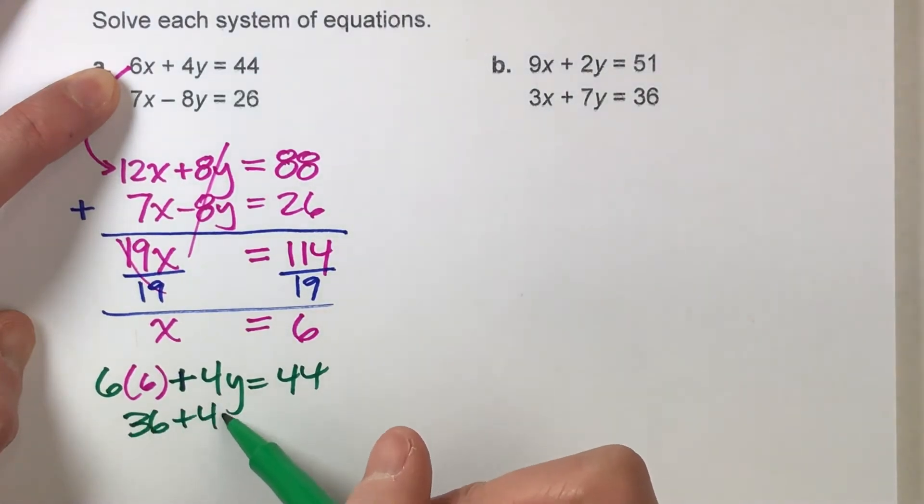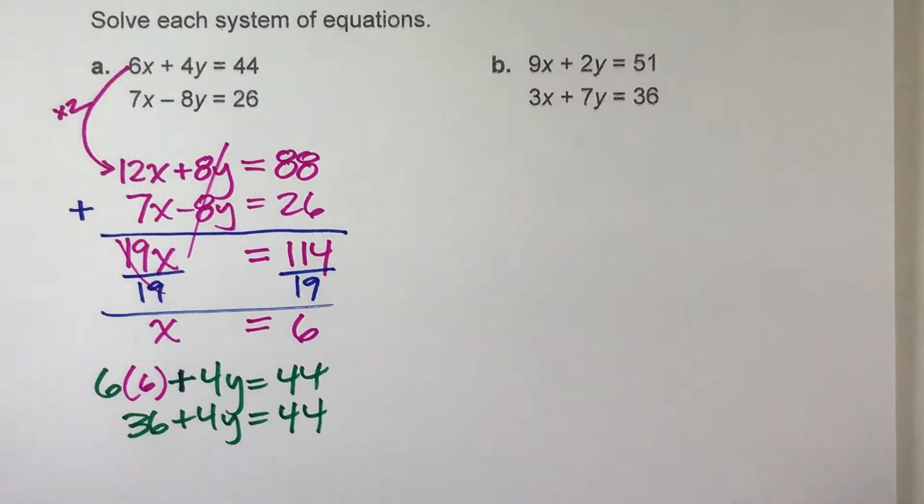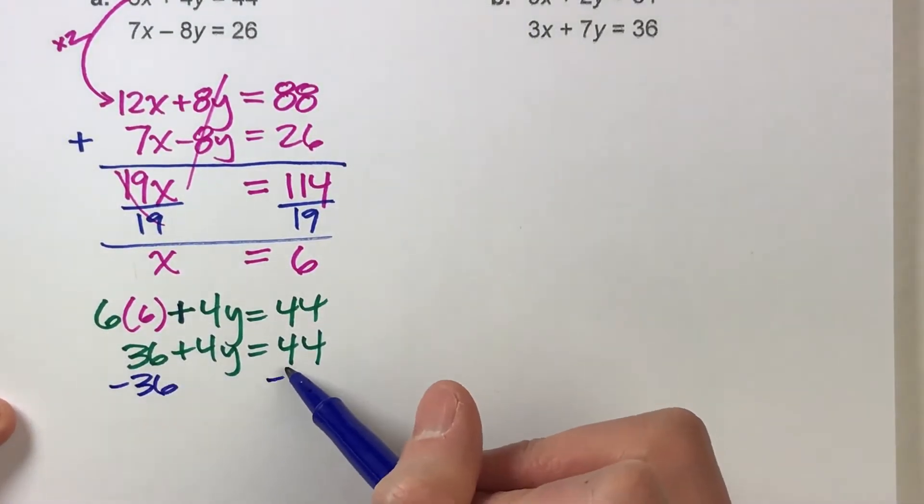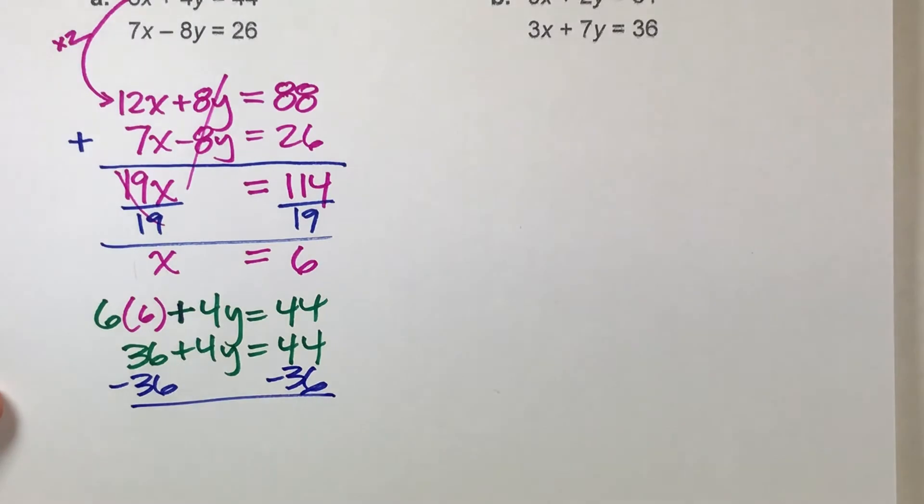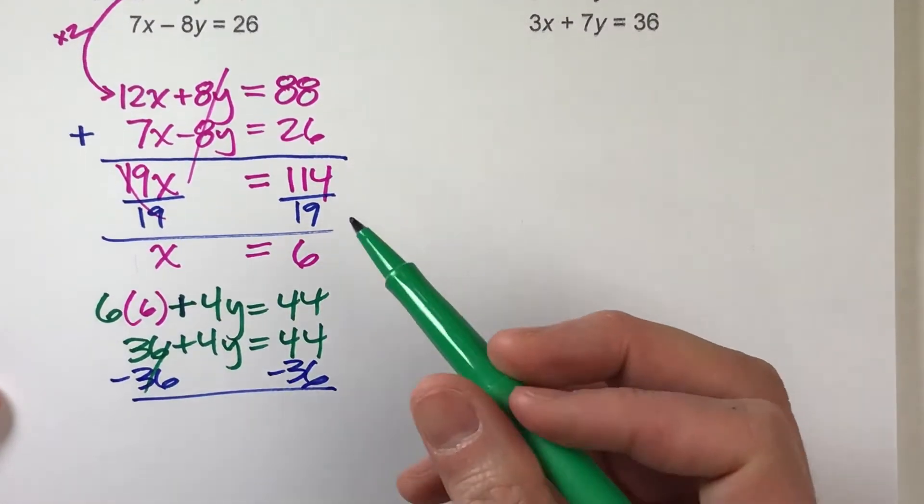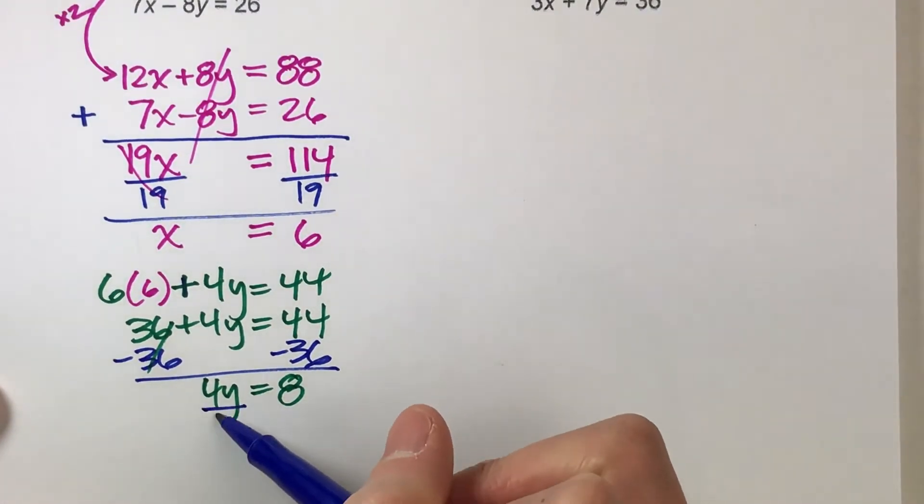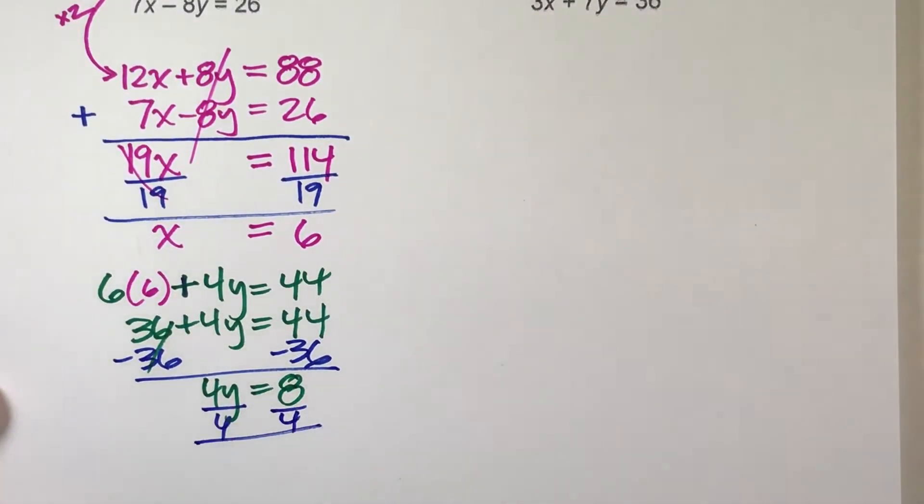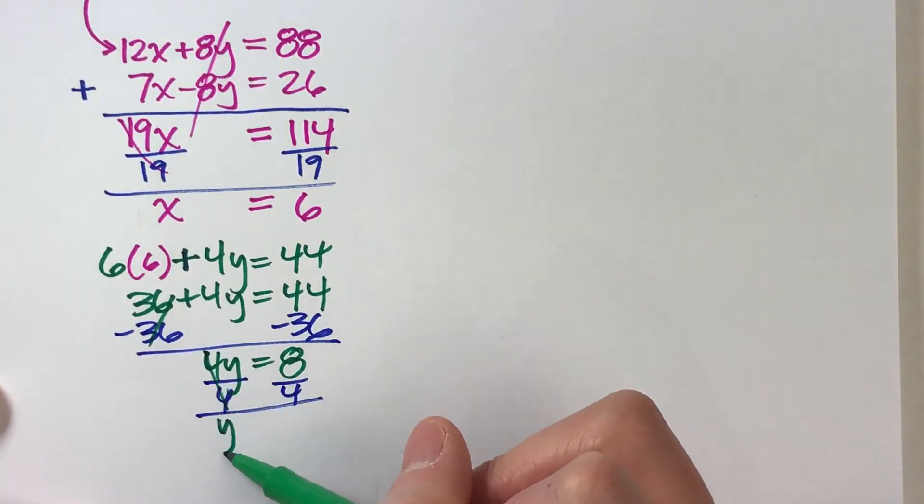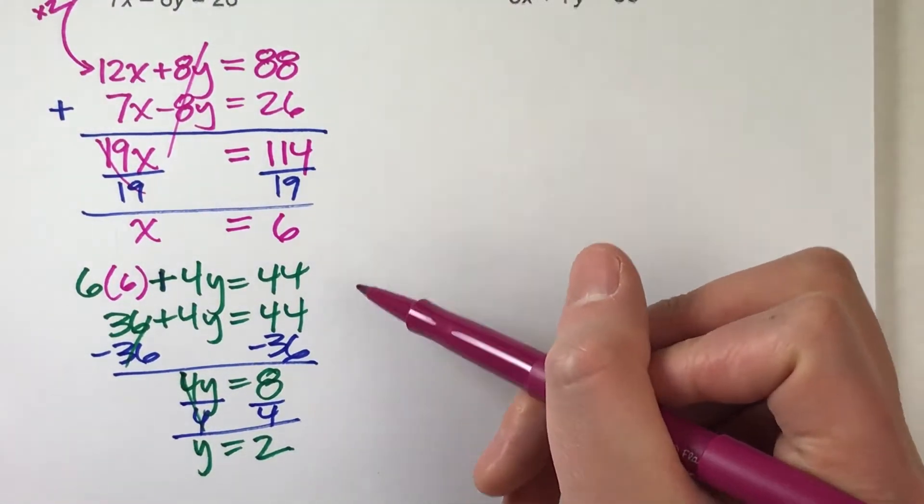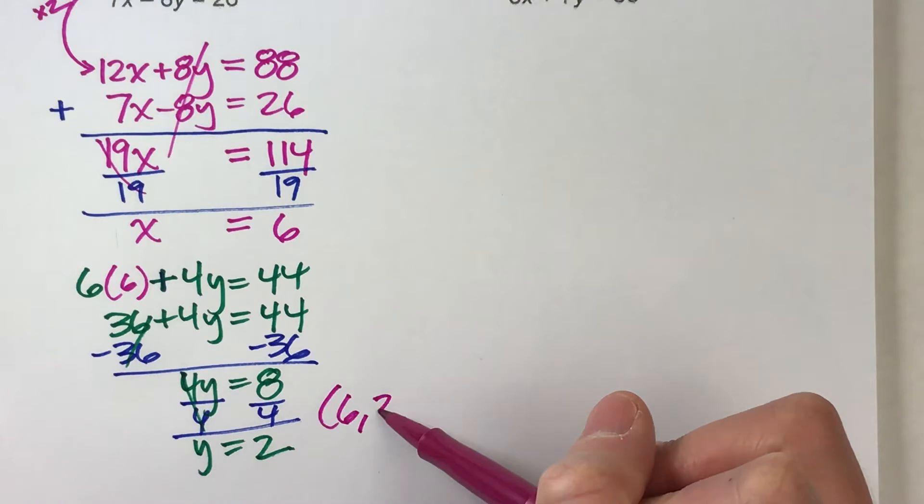To figure out Y, I'm gonna minus 36 on both sides. I'm gonna get 4Y equals 8, and then divide both sides by 4. I get Y equals 2. So now I found the solution to my system: X is 6, Y is 2.